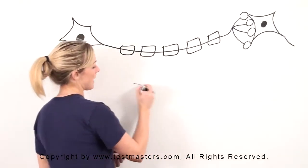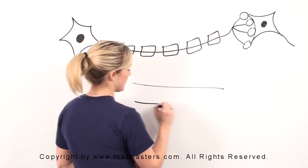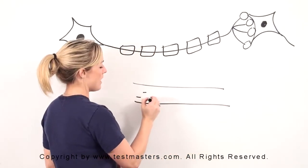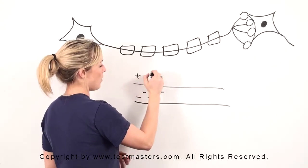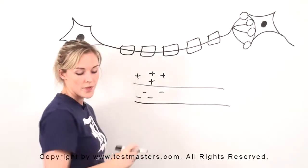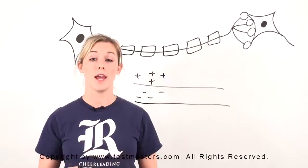If you wanted to look at a blown-up image, if this is your axon, you've got more negatives in here and more positives out here. This is achieved through different channels.